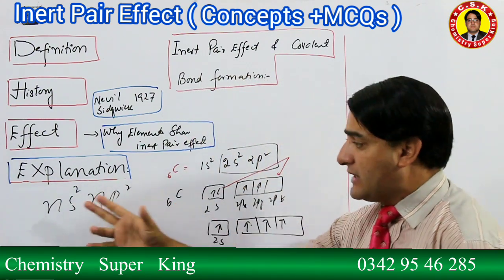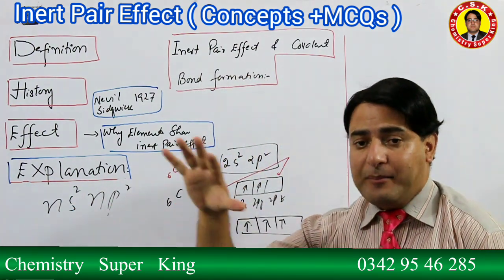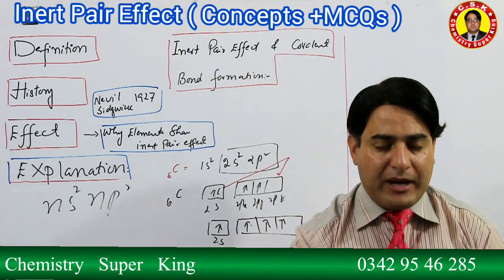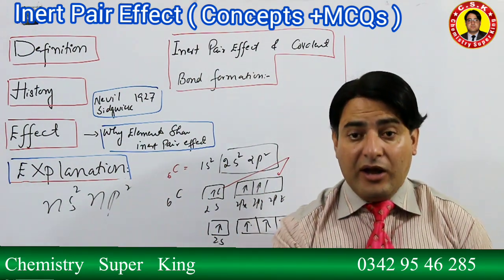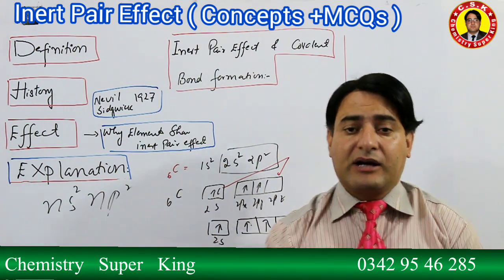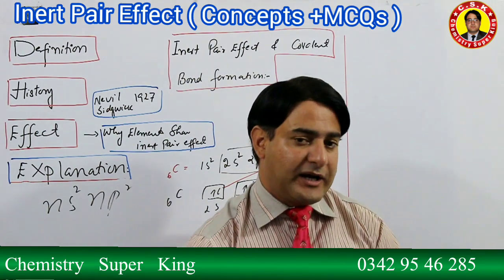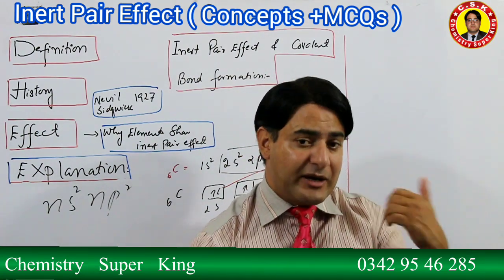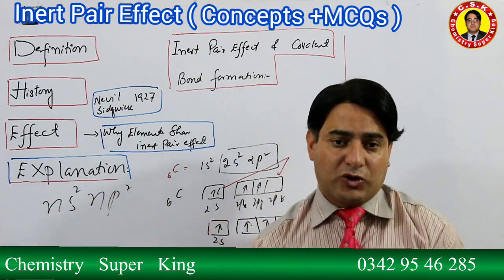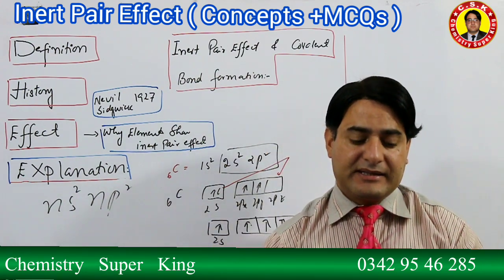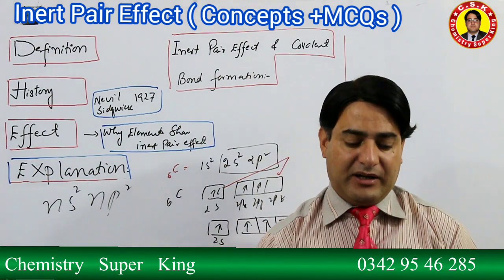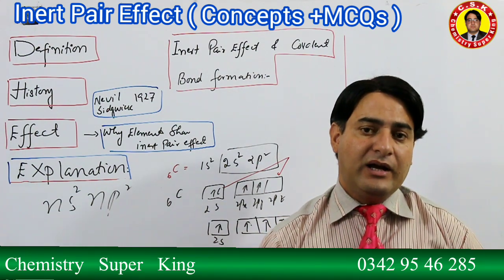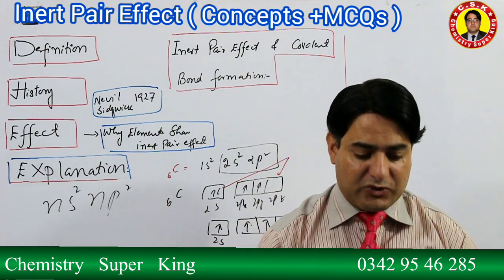In this way, in Carbon, no s-electron remains as an inert pair - all four electrons participate in bonding. Therefore Carbon shows a +4 oxidation state (or -4 if bonded with a more electronegative element). In both cases, the bonds formed are covalent.